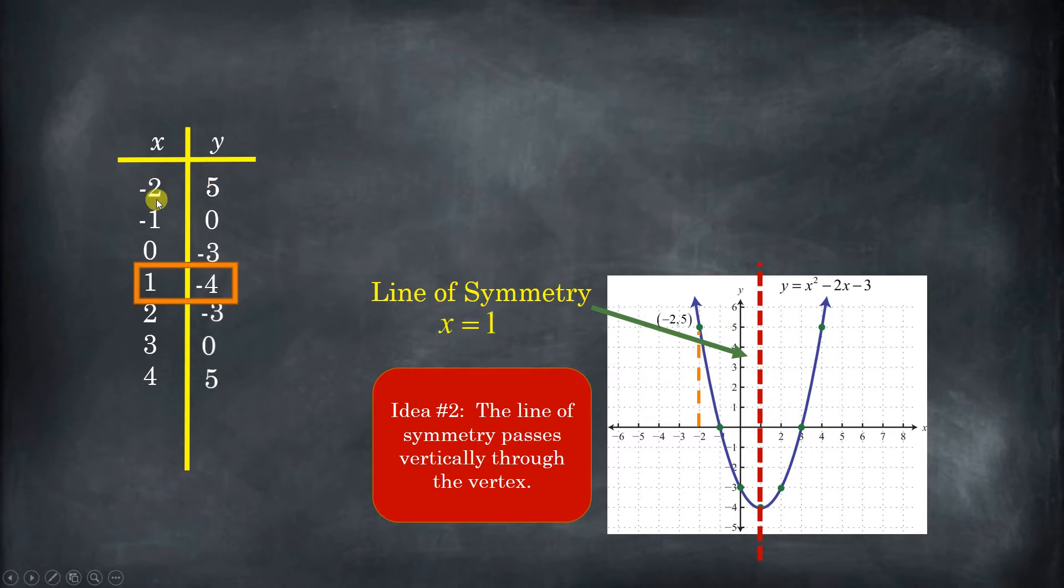And so on the graph on the left side, as x is increasing, y is decreasing. It's going from 5 to 0 to negative 3 to negative 4. But then it starts increasing by the same exact increments. So it's exactly the same. It's a mirror, it's reflected. But it's exactly the same pattern in the opposite direction from one side of the vertex to the other.